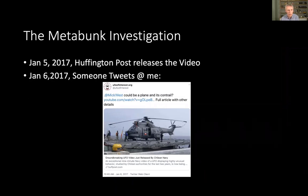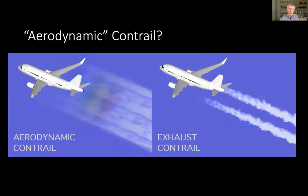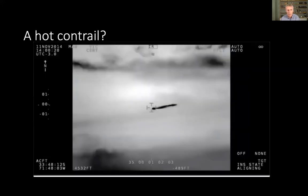So Metabunk, my website, we did an investigation on January 5th. Huffington Post released the video. January 6th, somebody tweets to me, at McWest, could be a plane and its contrail? I hadn't seen this before, so I took a look at it. And could it be? Yes. Yes, it could. And I recognize this as a type of contrail called an aerodynamic contrail, which is a type of contrail that forms at much lower altitudes. You might ask, you know, what's aerodynamic about it? There's two types of contrails, aerodynamic contrails and exhaust contrails. Exhaust contrails are what you normally see. It's the exhaust coming out of the engine. Aerodynamic contrails, they form over the wings. And they actually form in different atmospheric conditions, and so they can form at a lower altitude. So that was also something that the experts were wrong about.